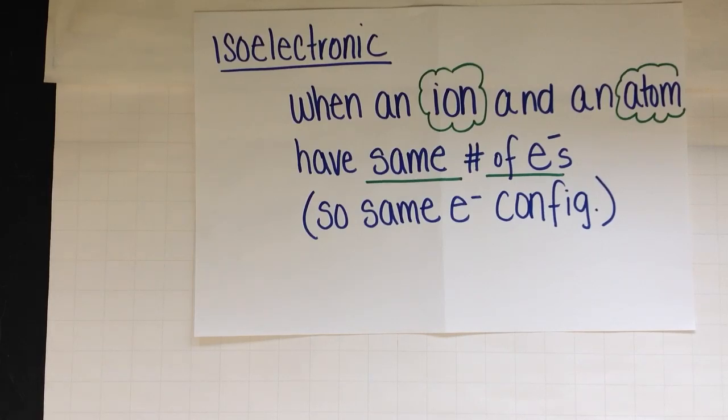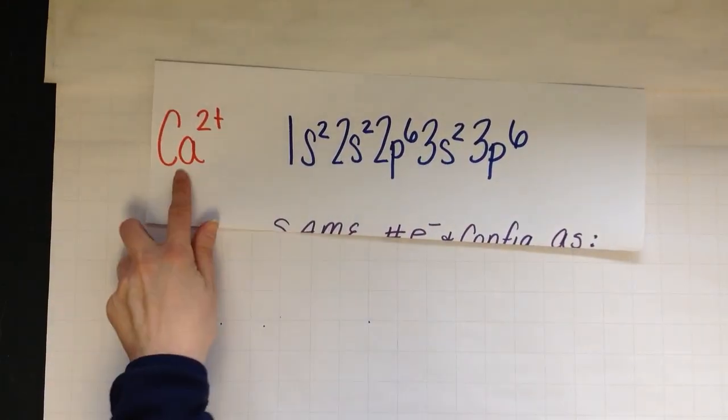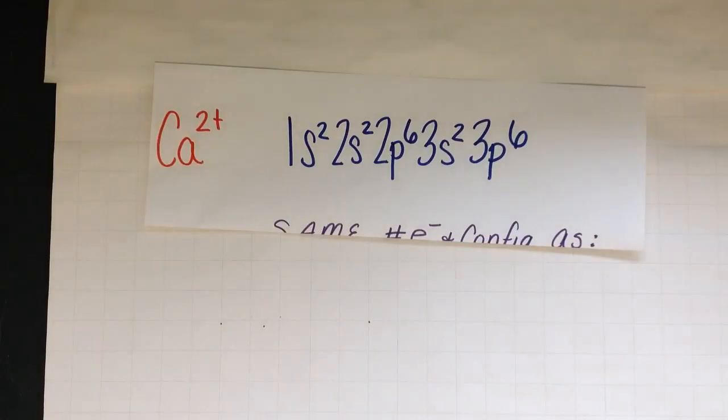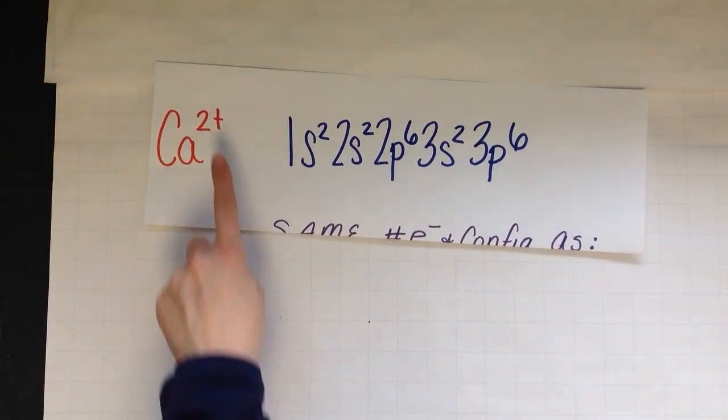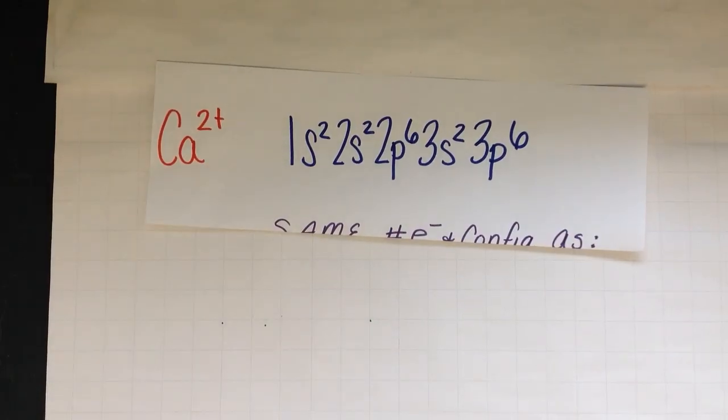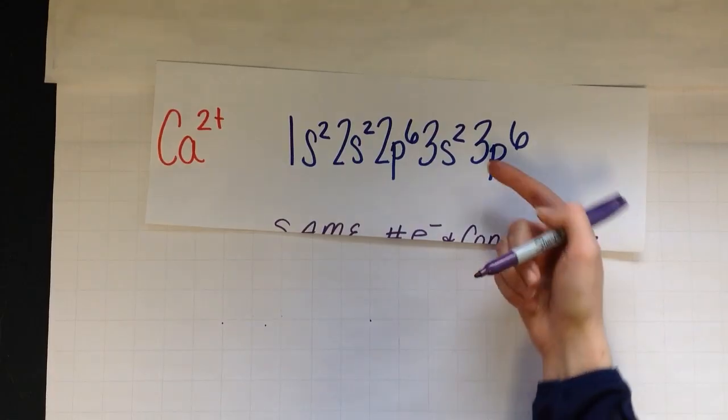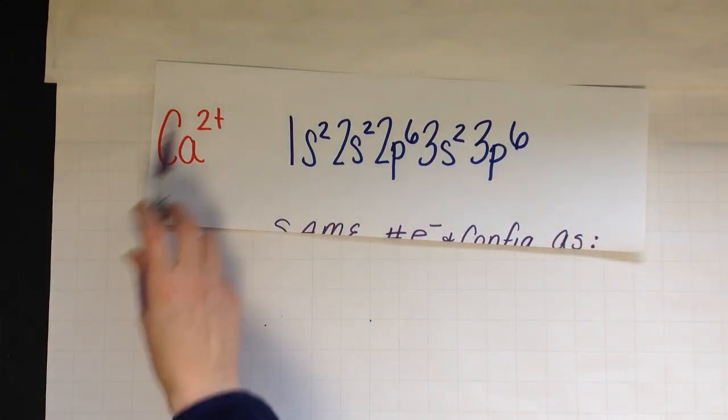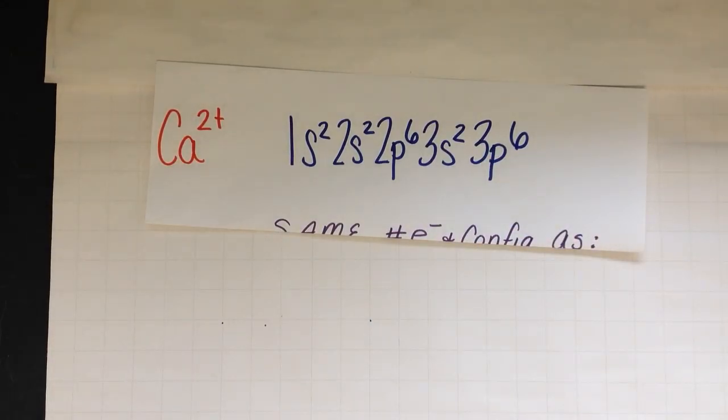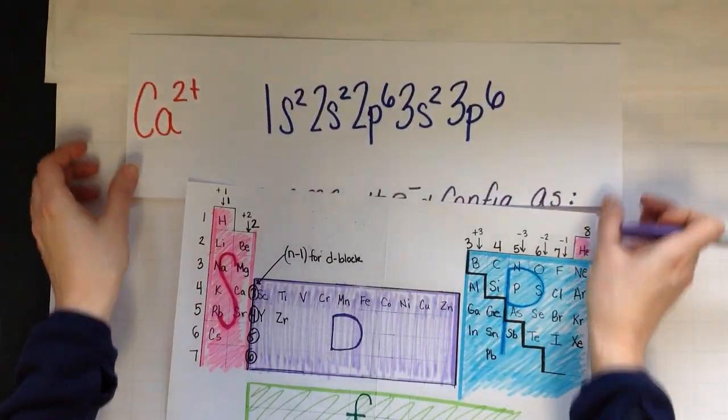What does that mean? Well, as we just saw, this is calcium, the cation's electron configuration, right? We lost that 4s2 because this means to lose two electrons. Whose electron configuration is this then? Well, it's calcium, the ion, but let's check this out.